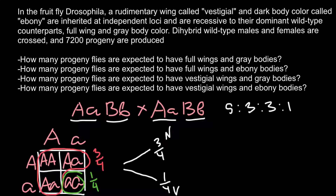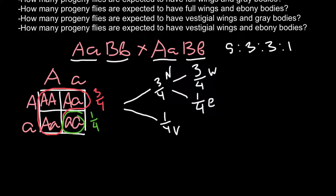Three-quarters of the progeny are going to have a wild-type body color (W) and one quarter are going to have a body color that we call ebony (E). So we also have three-quarters wild-type body color and one-quarter ebony body color. Now it is very easy to calculate all the frequencies of the phenotypes.